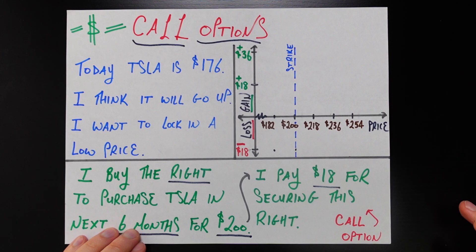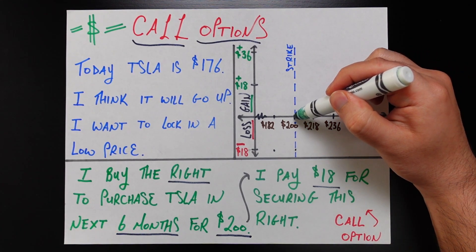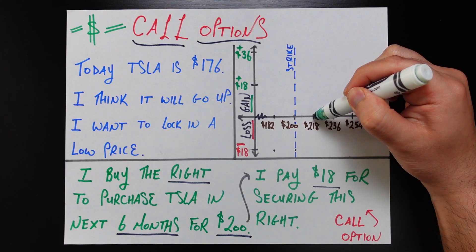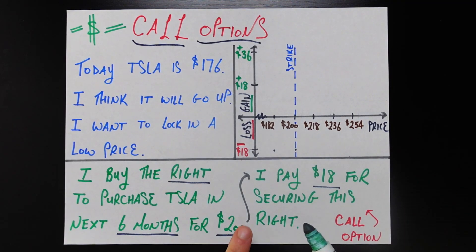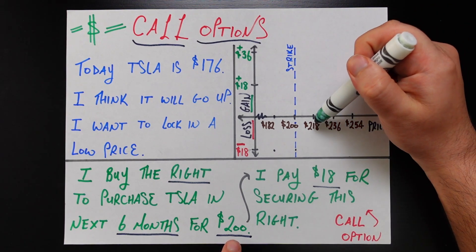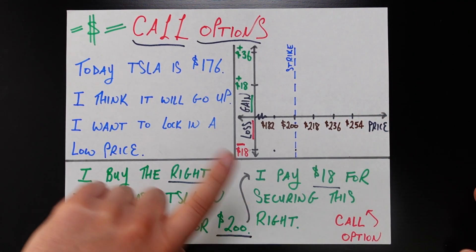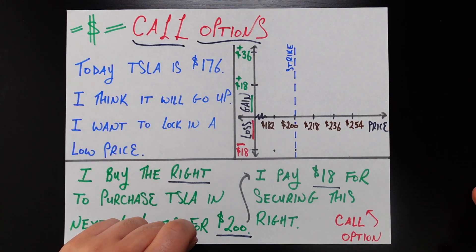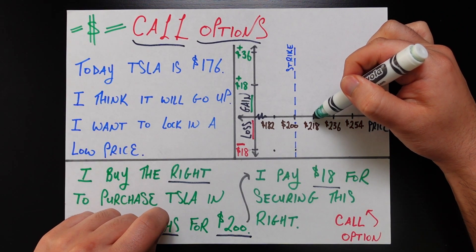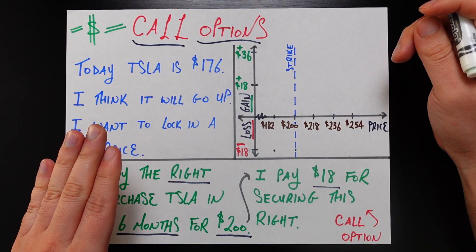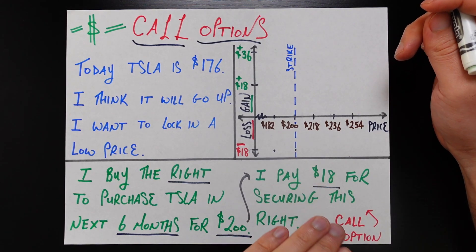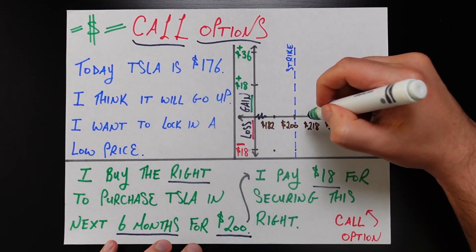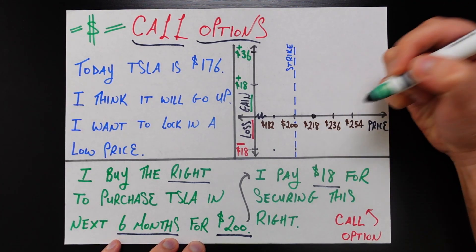Now this is where the story starts to get more interesting. Let's say the price of Tesla stock rises to $218. I go ahead and exercise the option, meaning I'm able to buy that Tesla stock for $200 even though the fair market value is $218. I can exercise my option, secure Tesla stock for $200, and sell it for the fair market value of $218, pocketing $18. But we need to remember we paid $18 in the first place to secure that option. So on the net, I'm at zero — a break-even point at $218.